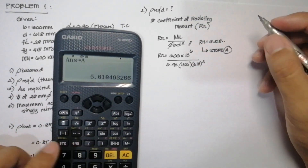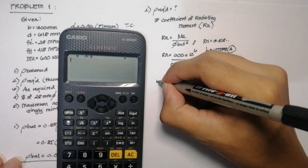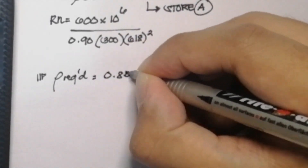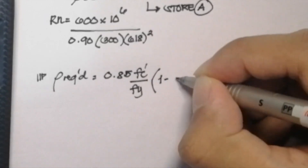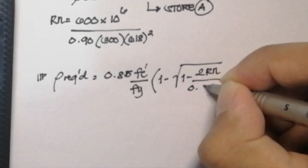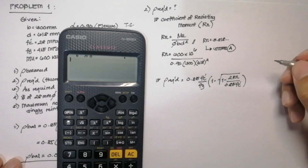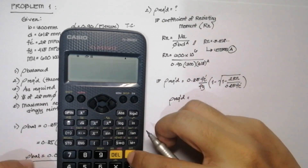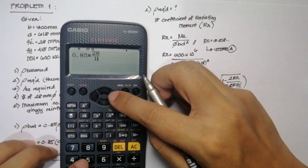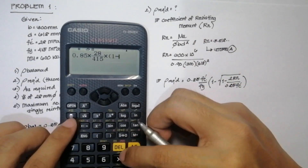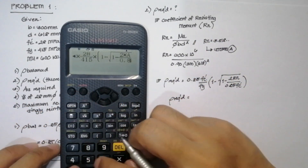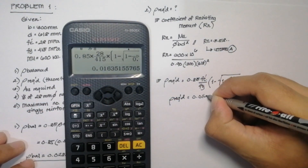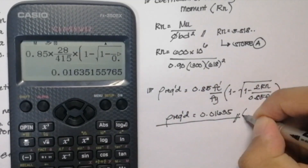After solving for the coefficient of resisting moment, we can now solve for the required reinforcement ratio using the formula: ρ = (0.85 × fc' / fy) × (1 − √(1 − 2rn / (0.85 × fc'))). This is the most efficient formula when using a PRC-approved calculator. Inputting our values, the required reinforcement ratio is equal to 0.01635.